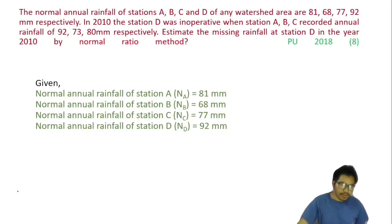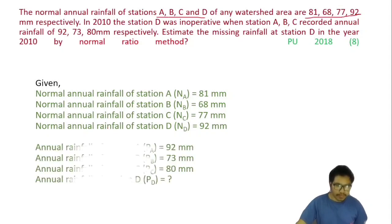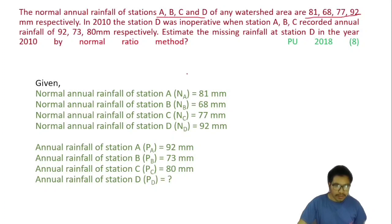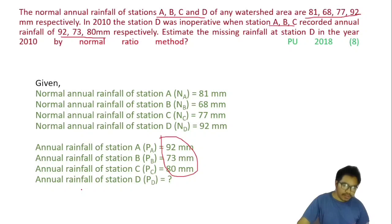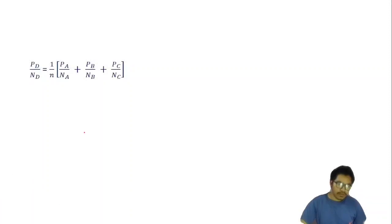The normal annual rainfall values for stations A, B, C and D are 81, 68, 77 and 92 mm respectively. The annual rainfall recorded at stations A, B and C in 2010 are 92, 73 and 80 mm respectively. We use the formula P_D = N_D / n × (P_A / N_A + P_B / N_B + P_C / N_C) and substitute all given values.